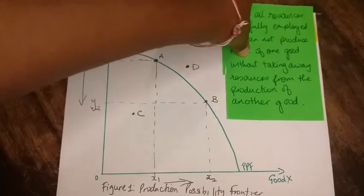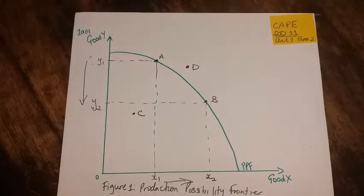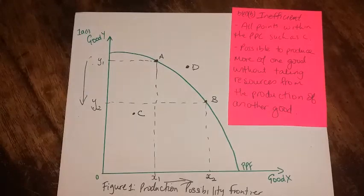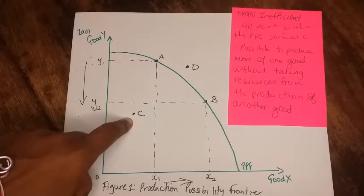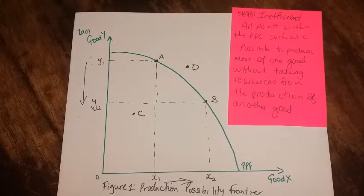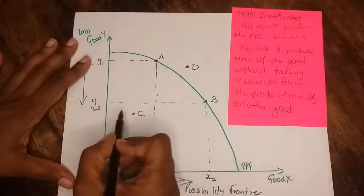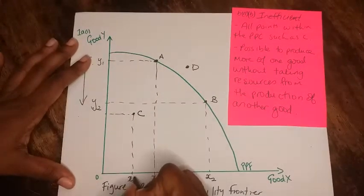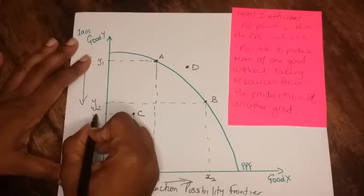Part B will be inefficient. Points which are inefficient will be points such as C, so anywhere within the boundary, because it is possible to produce more of one good without taking away resources from the production of another good. So if I was to sketch this really quickly and put in the coordinates, you would see we have a point such as - we can call here X3 and we can call this Y3.